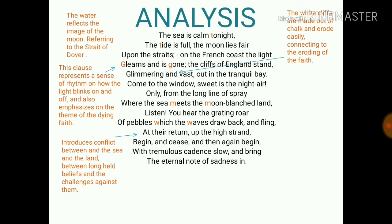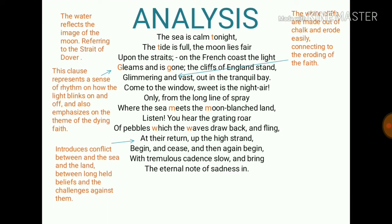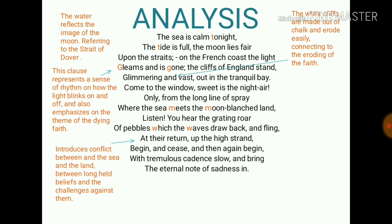In the analysis, the water reflects images of the moon — referring to the Strait of Dover Beach. The phrase 'gleams and is gone' creates a sense of rhythm, as the light blinks on and off, emphasizing the theme of dying faith. The white cliffs are made of chalk and erode easily, which connects to the eroding of faith — faith is gradually disappearing.